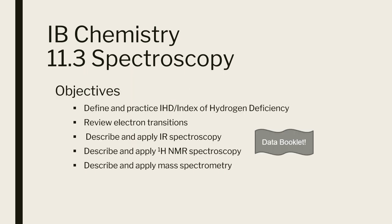Our objectives: we're going to define and practice the index of hydrogen deficiency. We're going to review electron transitions, describe and apply infrared spectroscopy, look at proton NMR spectroscopy, and then wrap up with mass spectrometry. We did mass spec back in the first semester, but this time we're going to look at molecules instead of just isotopes of atoms. If you don't already have your data booklet nearby, I highly recommend that you grab it, because we're going to be looking at a lot of tables to do some analysis of data.